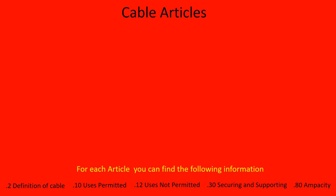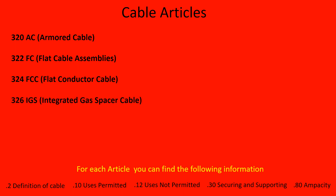Let's jump into the cable types. Article 320: AC, armored cable. Article 322: FC, flat cable assembly. Article 324: FCC, flat conductor cable. Article 326: IGS, integrated gas spacer cable. Article 328: MV, medium voltage cable. Article 330: MC, metal clad cable.